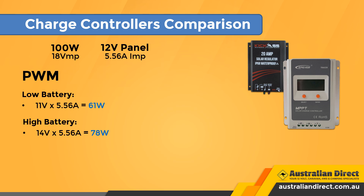When the battery is fuller, at 14 volts, more of the panel's available voltage is used. With the same 5.56 amps, the charge controller is outputting 78 watts into the battery: 14 volts times 5.56 amps equals 78 watts.